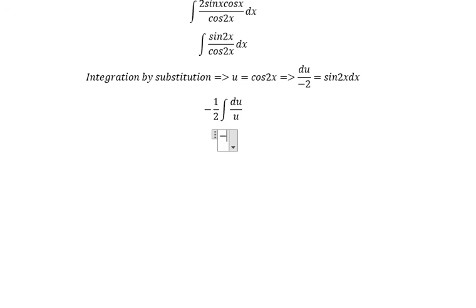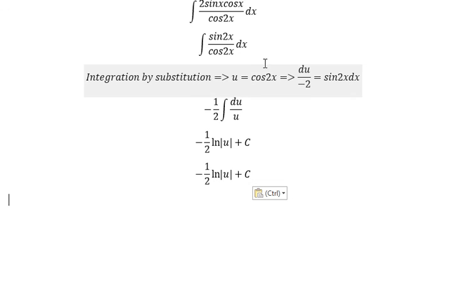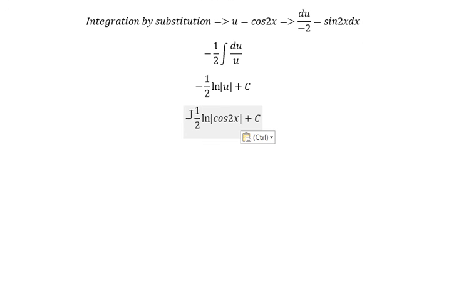Now we can get the final answer. The integral of du over u, we get about negative 1 over 2 ln, that's about natural log, and we have absolute value of u and we have c is about constant.